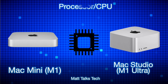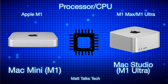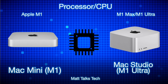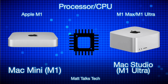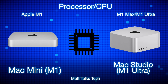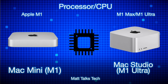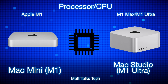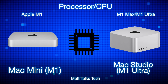The most important difference is what powers each machine. The Mac Mini has the M1 chipset with an 8-core CPU — four efficiency cores and four performance cores — and an 8-core GPU. The Mac Studio with the M1 Ultra is far more powerful, about eight times more powerful in many aspects.